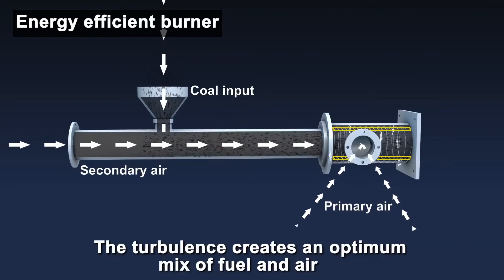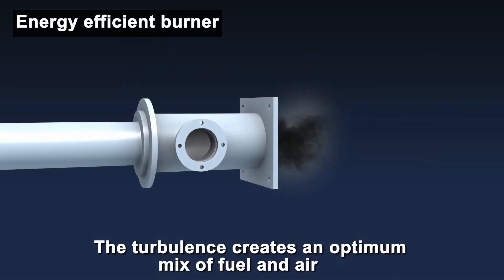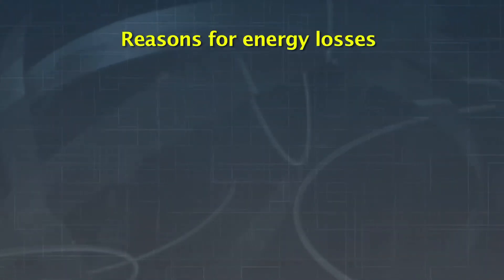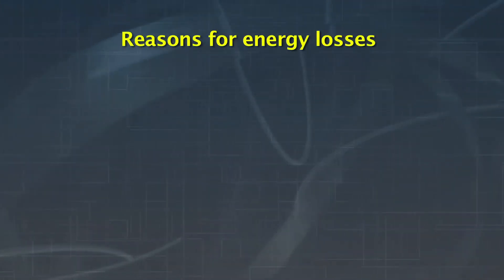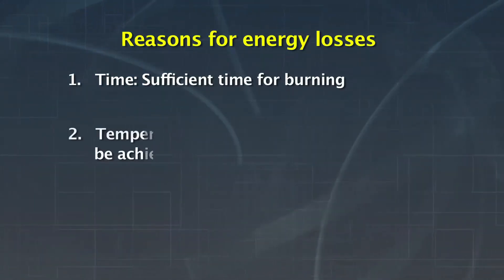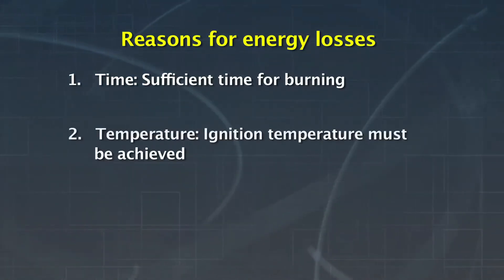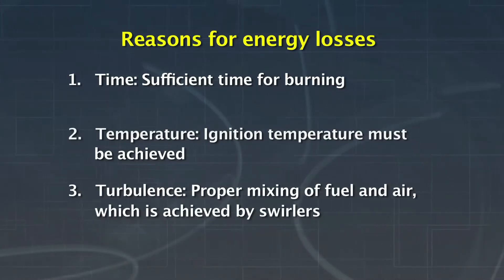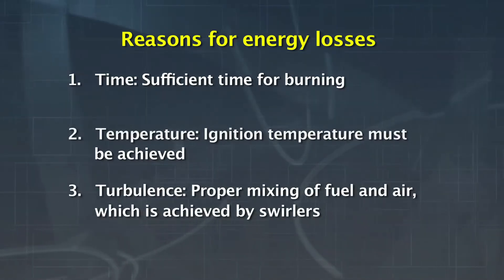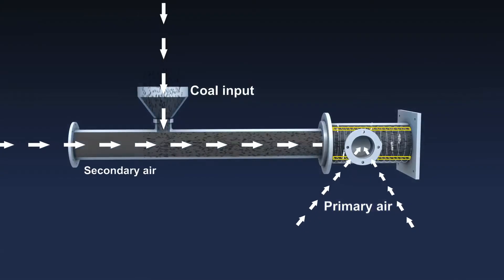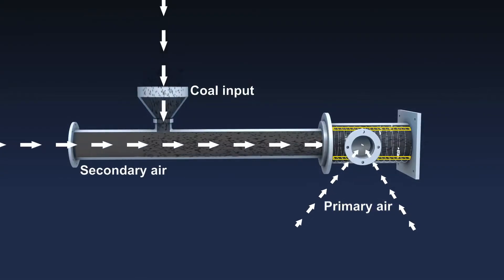The hot secondary air is also utilized for the complete combustion of powdered coal. This burner works on the basis of the three T's of combustion: Time — sufficient time for burning; Temperature — ignition temperature must be achieved; and Turbulence — proper mixing of fuel and air, which is achieved by swirlers. Vanes are fabricated in between the annular pipes.